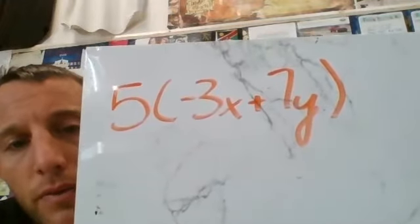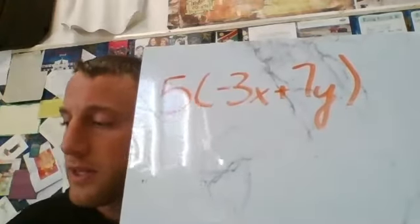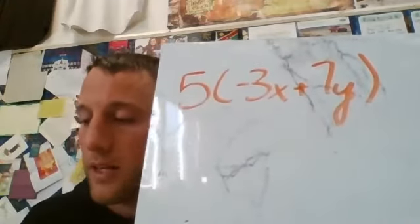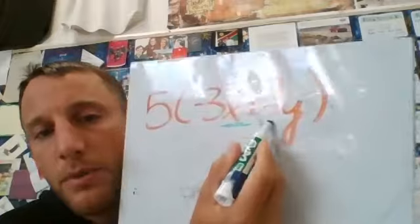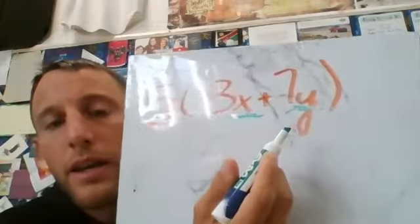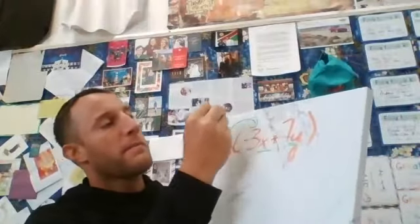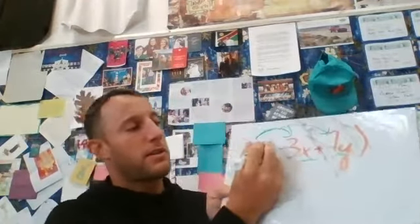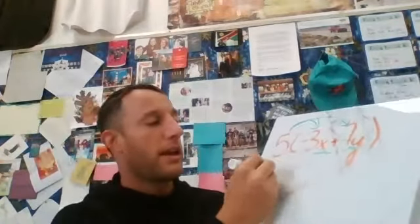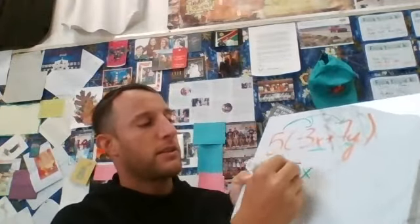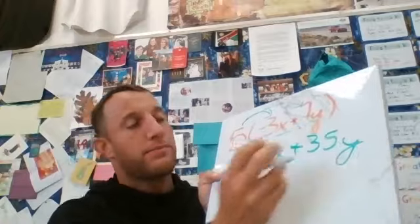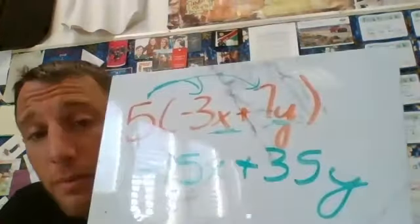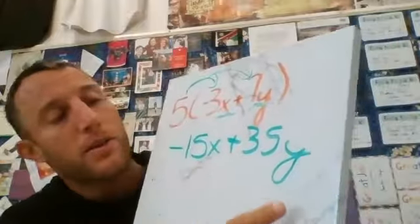So check this one out. I have five times the quantity negative three X plus seven Y. And the reason is I can't solve this like I did with the negative 40 on the first one, because these are two different variables. So here's my X and here's my Y and I can't do this. What I have to do is distribute out the five.